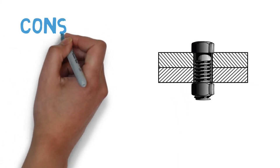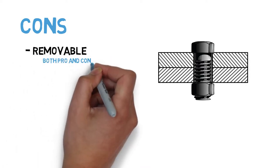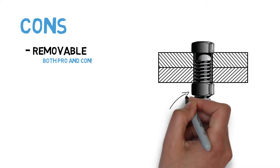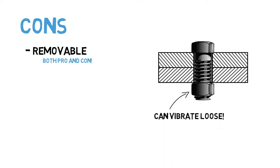Moving to some cons of threaded fasteners, the fact that they are removable can also be a negative attribute. During operation, loading and vibration can cause threaded fasteners to become loose and even fall out.